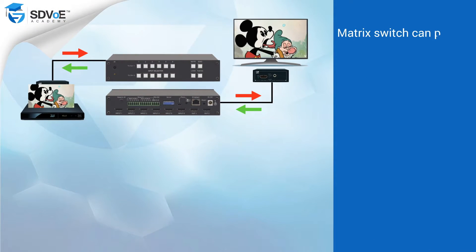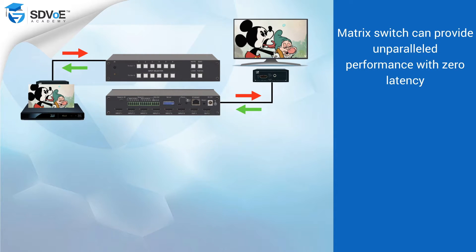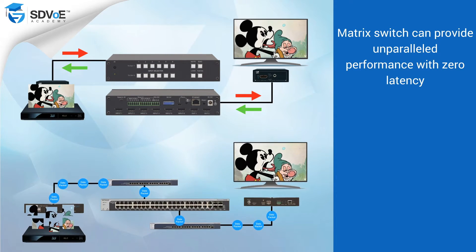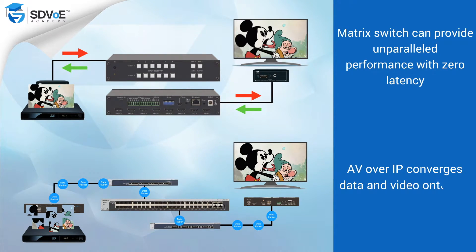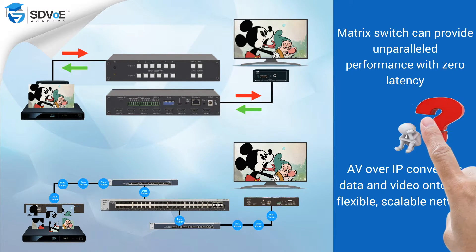Back to the present day. If we want unparalleled performance with zero latency, we would plump for a matrix switch solution, and why not? If we want to maybe combine AV with data, or design a solution which may be easily expanded, we would choose an AV over IP solution, even though it might mean applying some compression to the video to make it fit on the network.